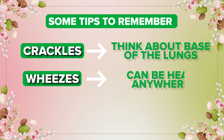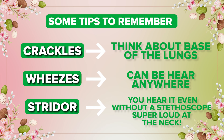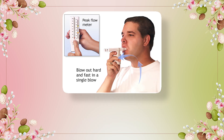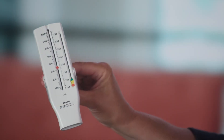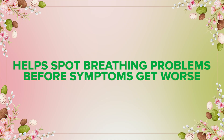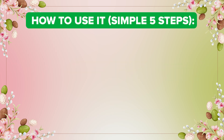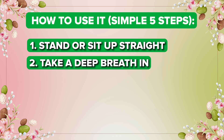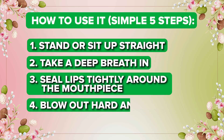Some tips to remember: crackles are at the base of the lungs, wheezes can be heard anywhere, and stridor you can even hear without a stethoscope because it's very loud. Now, the peak flow meter — your best friend for asthma monitoring. It measures how fast a person can exhale and helps spot breathing problems before symptoms get worse. To use it: step one, stand or sit up straight; step two, take a deep breath in; step three, seal lips tightly around the mouthpiece; step four, blow out hard and fast.